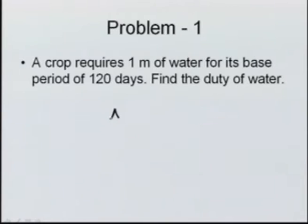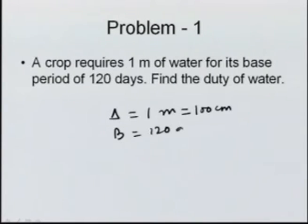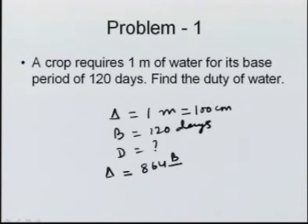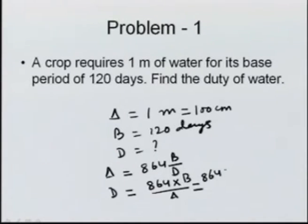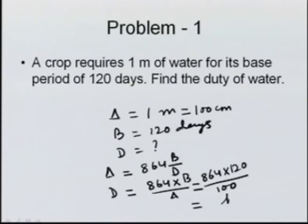Delta is equal to 1 meter, which I can write as 100 centimeter, and B is 120 days. We know the formula: delta = 864 × B / D. Rearranging, D = 864 × B / delta = 864 × 120 / 100. Calculate this number; the unit will be in hectare per cumec.